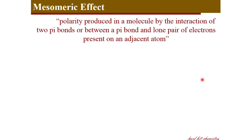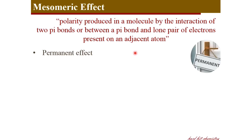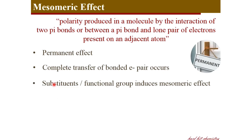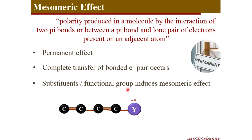We move on to mesomeric effect. Mesomeric effect is the induction of polarity in a molecule by the interaction of two pi bonds or between a pi bond and a lone pair of electrons present on adjacent atoms. It is a permanent effect involving complete transfer of bonded electron pairs, and the presence of certain substituents and functional groups on the molecular structure induces mesomeric effect.